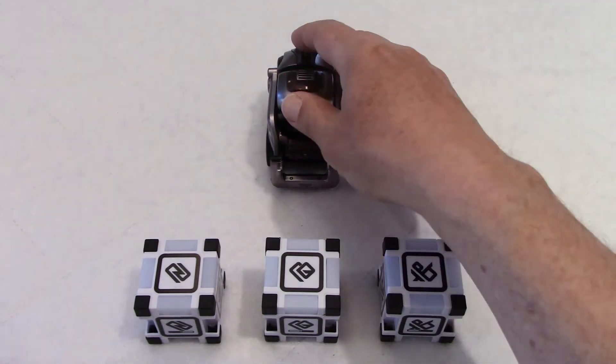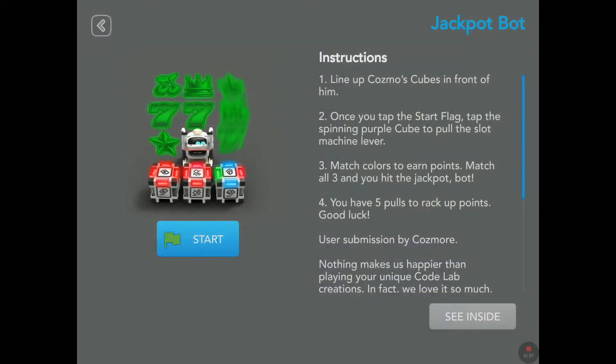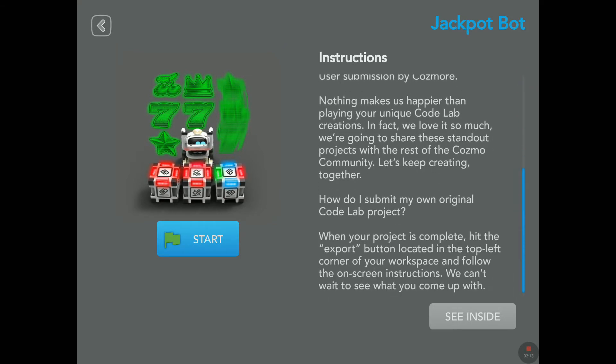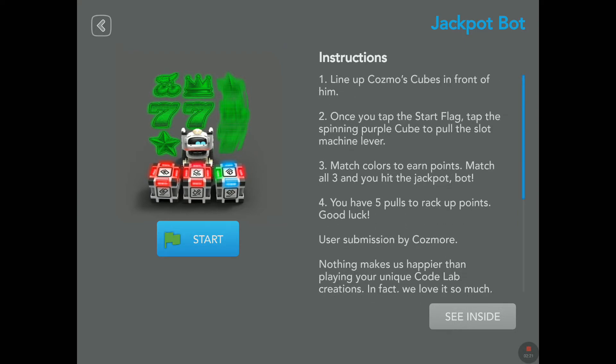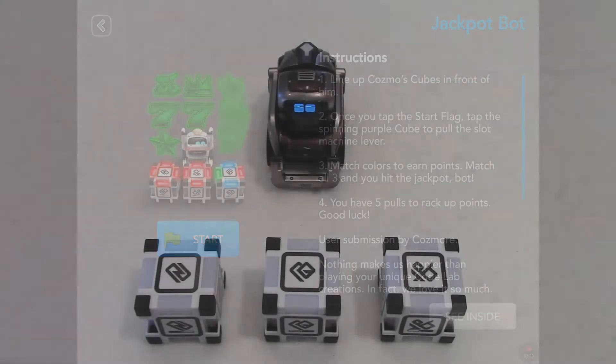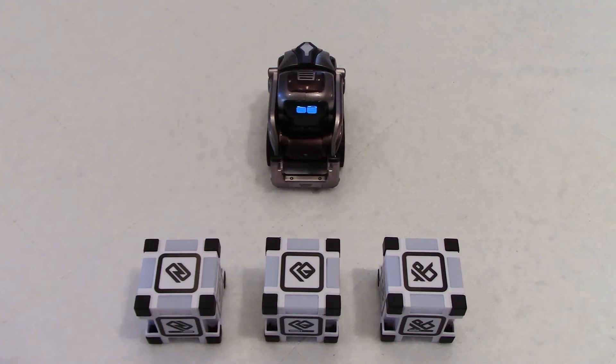So right here, instructions number two: once you tap the start flag, tap the spinning purple cube to pull the slot machine lever. Okay, so the purple cube is the lever. Match colors to earn points, match all three and you hit the jackpot. You have five pulls to rack up points, good luck. And at the bottom here we have just the usual text from Anki. Perfect.